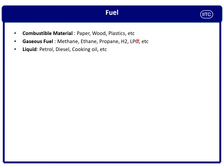Gaseous fuels include methane, ethane, propane, hydrogen, and the most common gas in our kitchen — LPG. Liquid fuels include petrol, diesel, cooking oil, grease, and similar liquid fuels. Electrical and metal fires are different categories and are part of the fuel classification we will discuss separately.